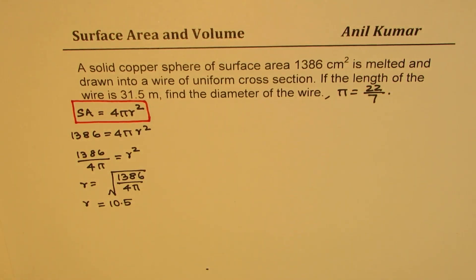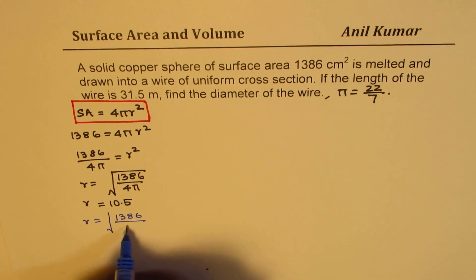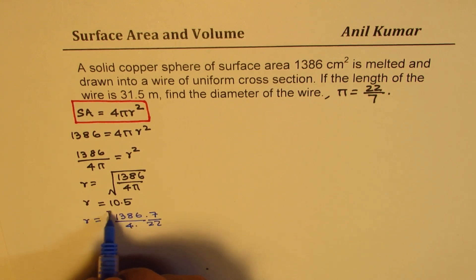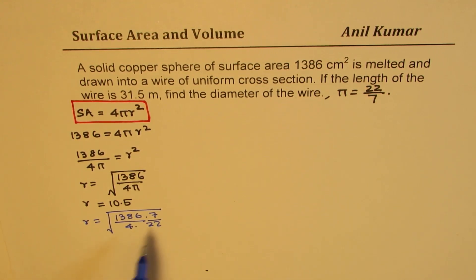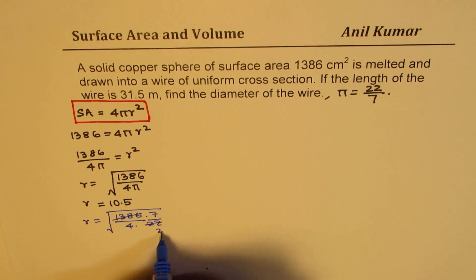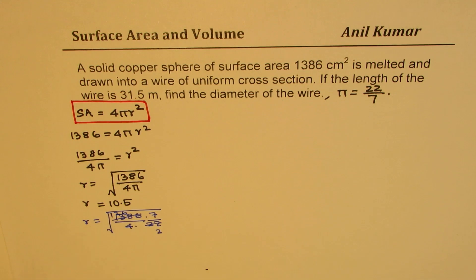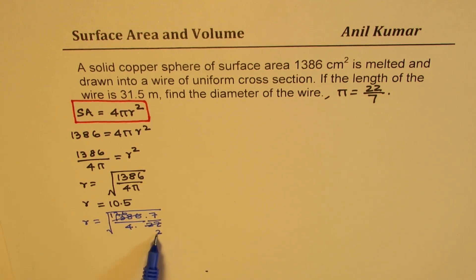Now, if you take π as 22/7, we calculate r as √(1386 / (4 × 22/7)). You can simplify because 1386 is a multiple of 11 — notice 1+8=9 and 6+3=9, so you can divide by 11 to get 2 at the top. Dividing 1386 by 11 gives 126. And 126 divided by 2 gives 63.